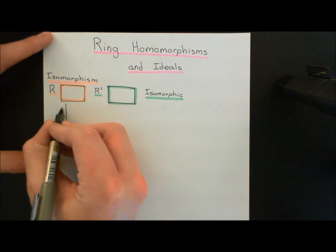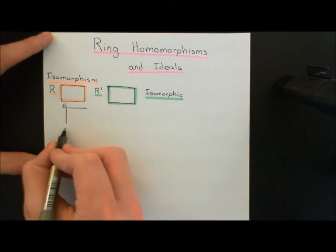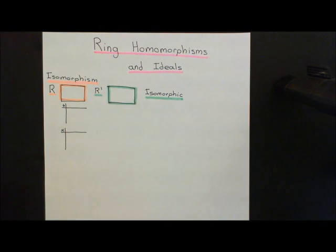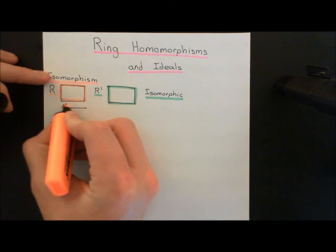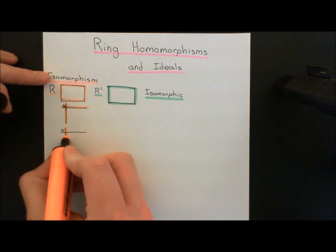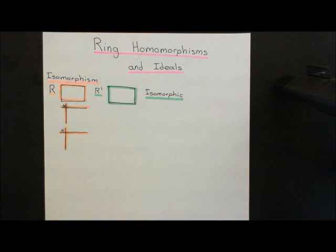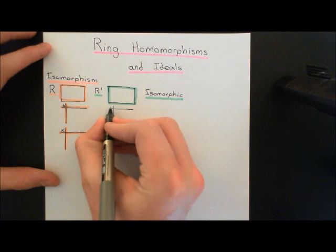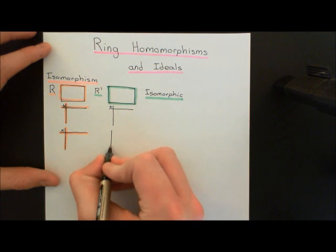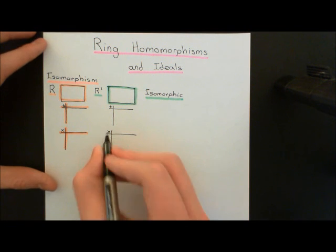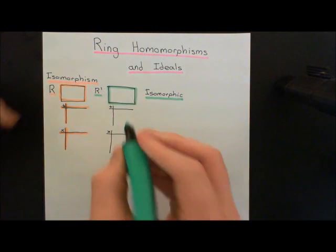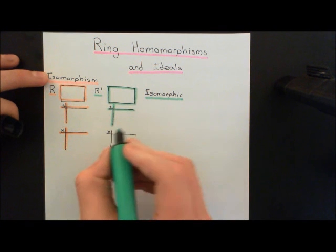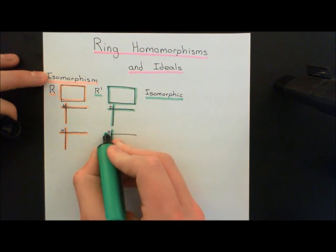Both of these rings will have addition and multiplication laws defined on them. Here is the addition law for ring R, and here is the multiplication law for our first ring — I'll colour those in orange. And R prime, our second ring, will also have two composition tables: an addition composition table and a multiplication composition table, coloured in green.